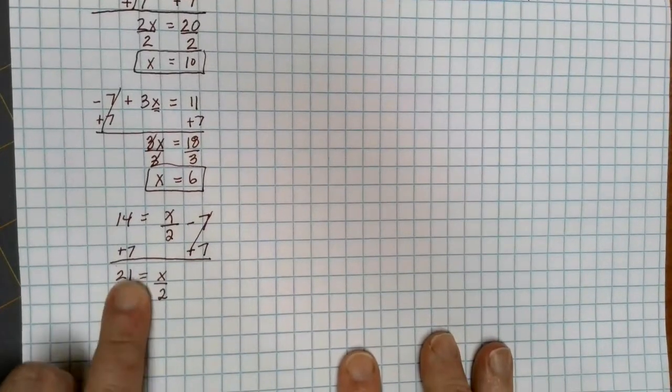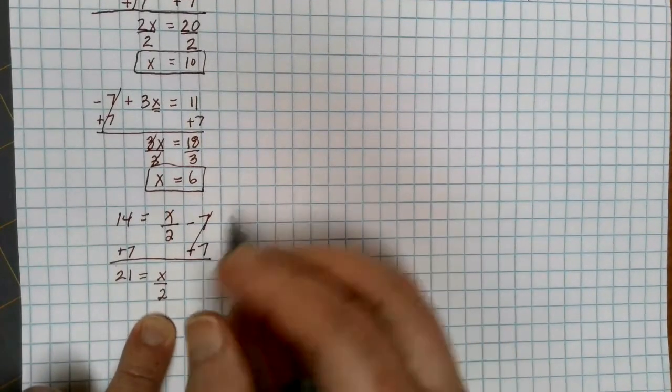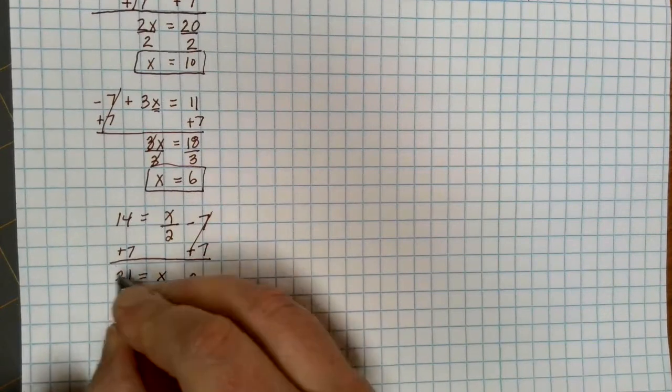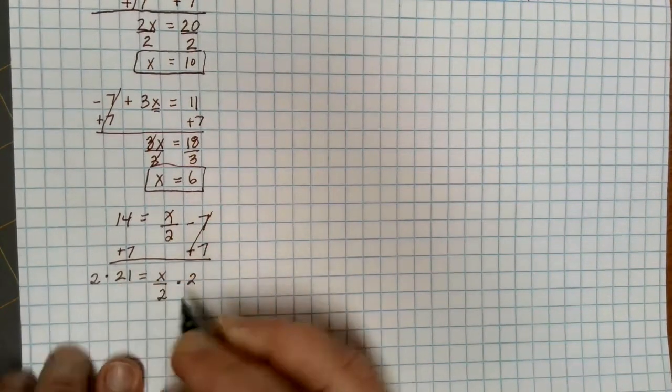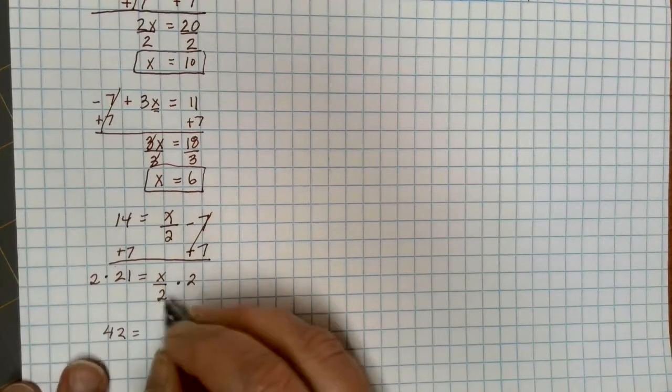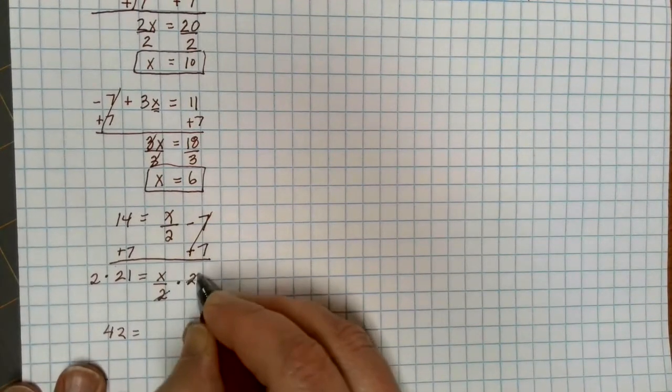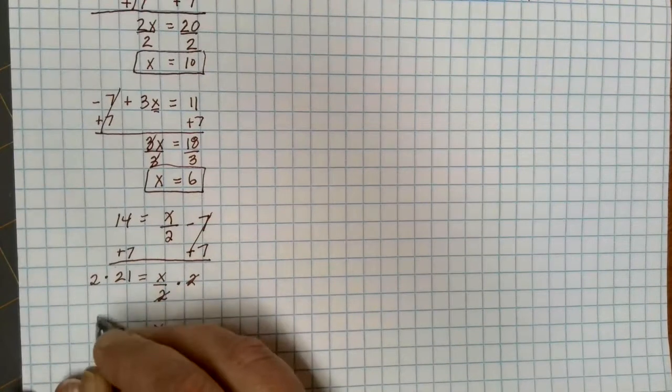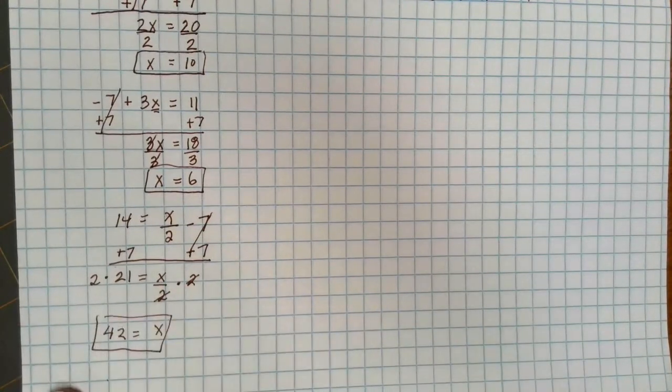To finish getting the x by itself, it's still being divided by 2, so I can times by 2 on each side. And I end up with 42 equals the 2 divided and times cancel each other out and leaves me with x, and 42 is, of course, the answer.